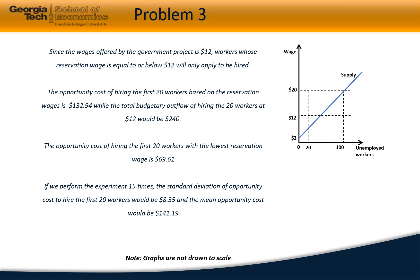The low estimate of the opportunity cost of hiring the first 20 workers will be 69.61 dollars. If we perform the experiment 15 times, the standard deviation of opportunity costs to hire the first 20 workers would be 8.35 cents, and the mean opportunity cost would be 141.19 dollars for the 20 workers.